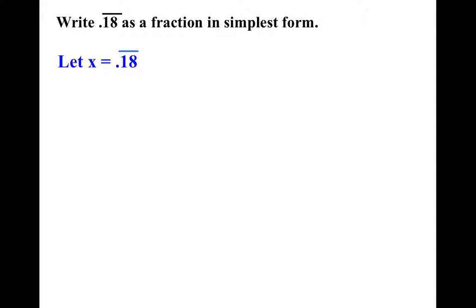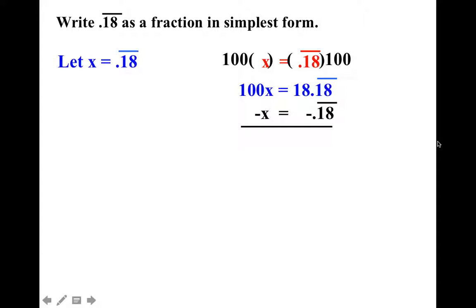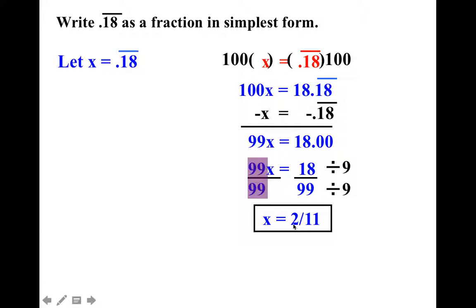Why don't you try this one? Multiply both sides by 100. I get 100x equals 18.181818. And then when I subtract out my original equation, I'm going to get 99x. All these 18's are going to become 0's. So when I divide by 99, in this situation I had to remember to simplify. And once again, if you don't think I'm right, please take a calculator and divide it and see what you get.